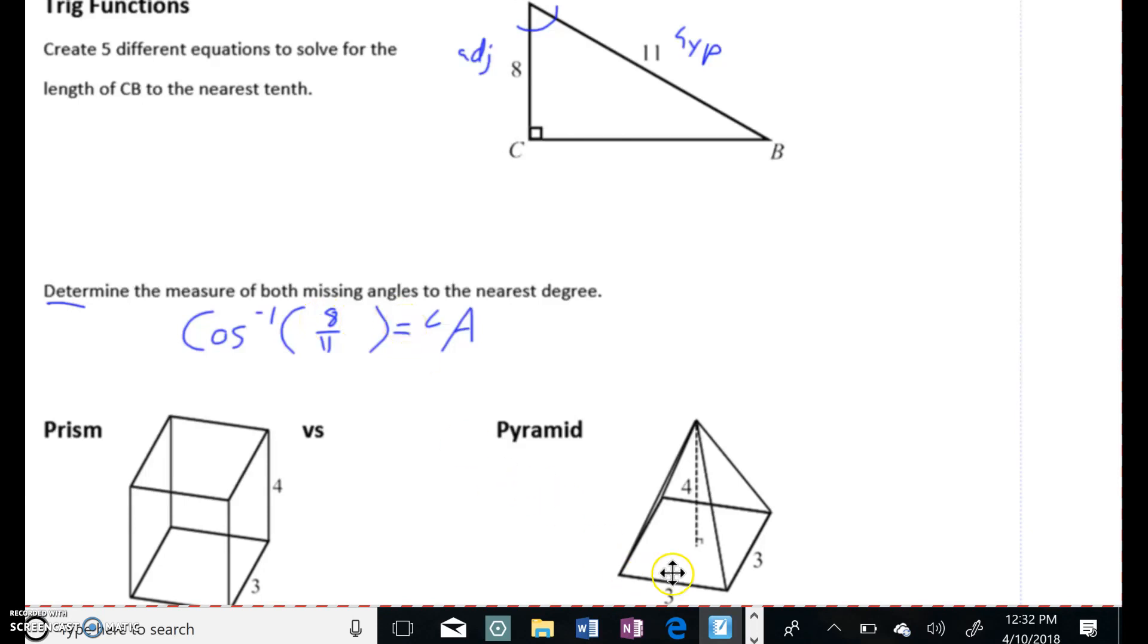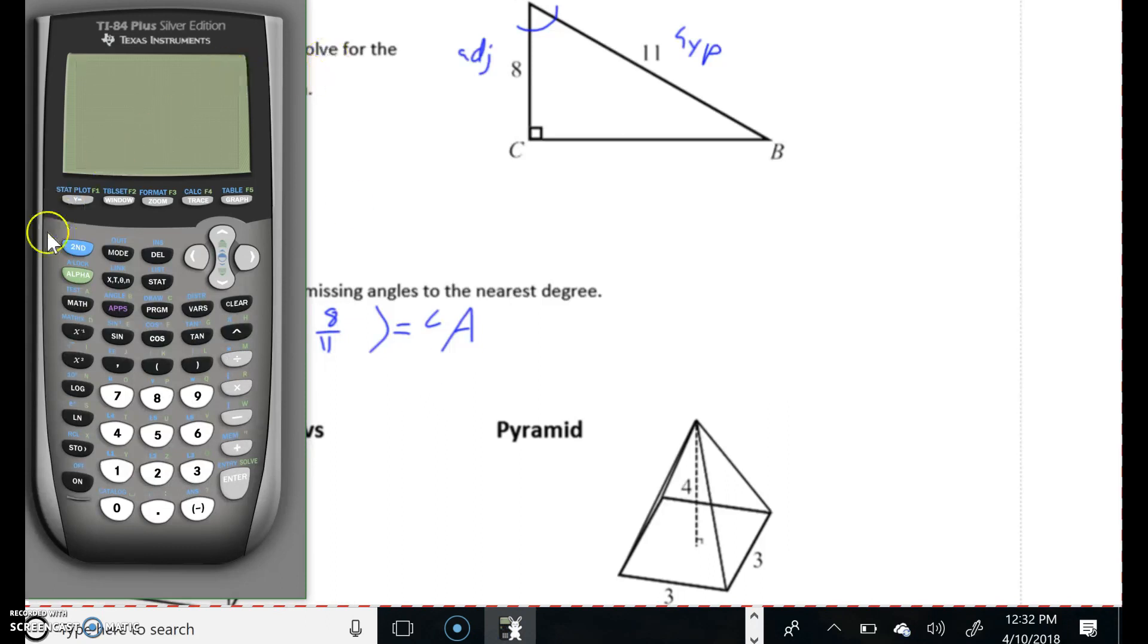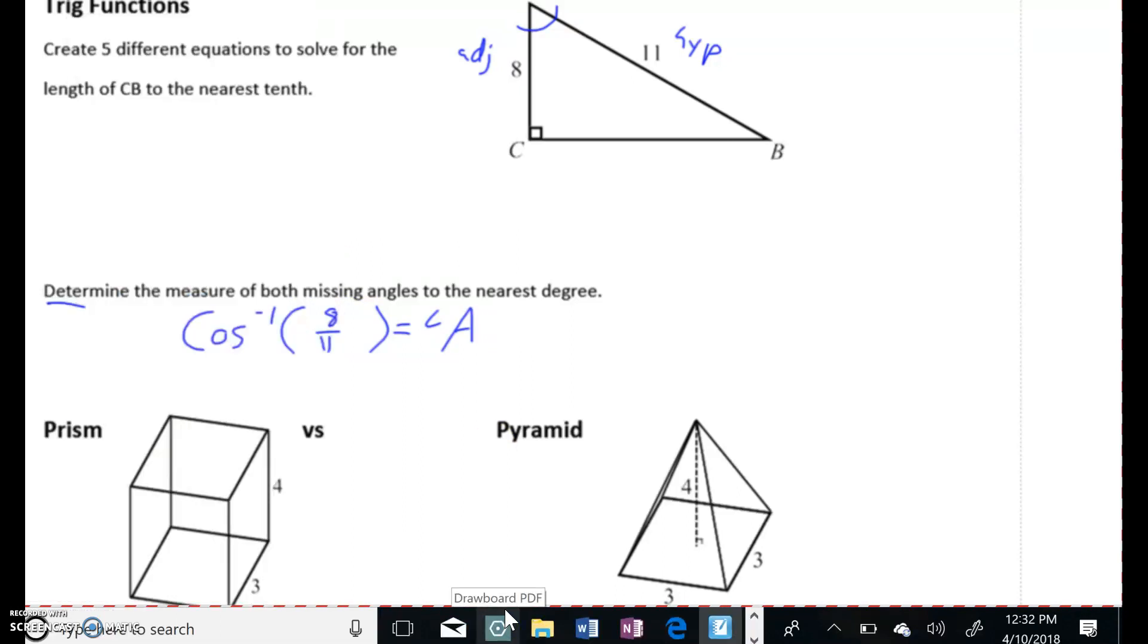So it's inverse cosine 8 over 11 will get us angle A. And so we're going to have to use our calculators for this. Make sure your calculator is on degree mode. And so the way we do inverse sine, cosine, and tangent, is you've got to hit the second key. So second cosine. And then our 8 divided by 11. Close those parentheses. And here we get 43.34. We want to round this to the nearest degree, so it's going to be 43 degrees. So angle A is 43 degrees. And so let me add that 43 in there.